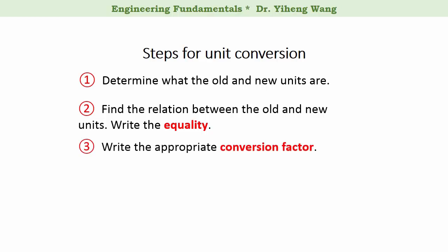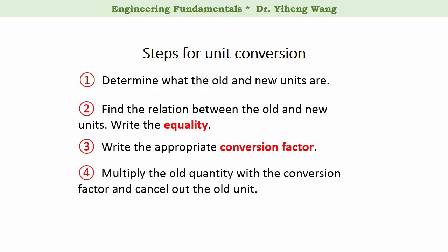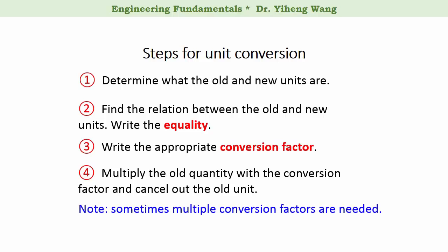Step 3: based on the equality, write the appropriate conversion factor, which I will explain more in the examples that follow. Step 4: set up an equation, multiply the given quantity by the conversion factor, and cancel out the old unit, therefore achieving the quantity in the new desired unit. Sometimes the unit conversion procedure can be more complicated, and multiple conversion factors and multiple calculation steps are needed.